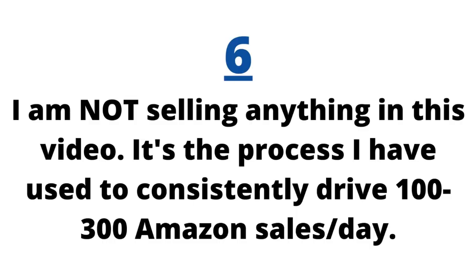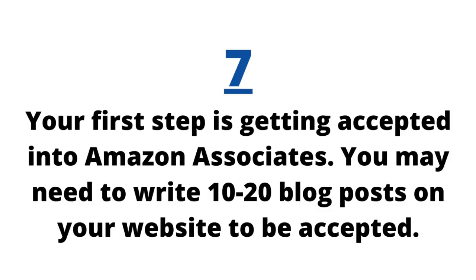Number seven, last but not least: you do need to be accepted into Amazon associates, which means you'll need a website with some blog posts and content. If you're not accepted and don't have a website that will get you accepted, you should start writing some blog posts. Do a little keyword research — you can use the Google Keyword Planner — and get started with the main pages you want to build. As you build out your website, Amazon Associates and even Google AdSense are more likely to accept you as a publisher. If you're building your first website, you'll need to write or outsource some blog posts and get them published to your blog before they'll accept you.